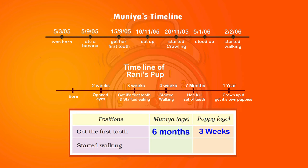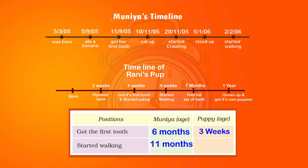Three weeks is not even one month, because in a month there are four weeks. Did you fill it in your table? Let us move on. Next row is 'started walking.' When did Muniya start walking? When she was eleven months old. What about the puppy? It started walking after four weeks.